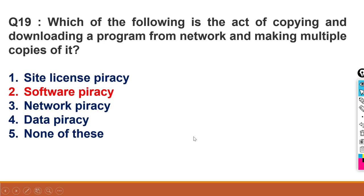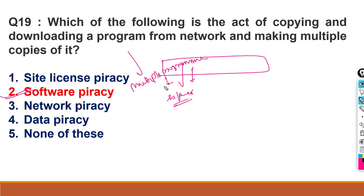Which of the following is the act of copying and downloading a program from network and making multiple copies of it? Site license piracy, software piracy, network piracy, data piracy. So your answer is software piracy. This means from any of your network, we have downloaded any software and that software is made into multiple programs. We have done multiple copies and we have sold the software and it is pirated.